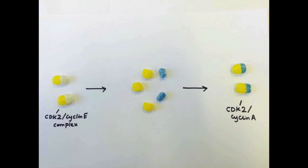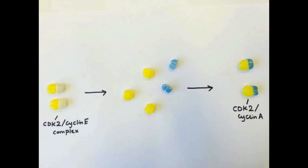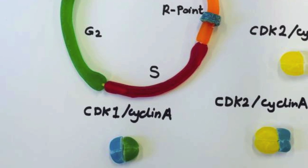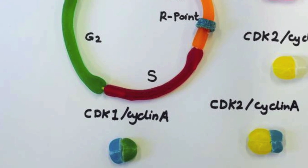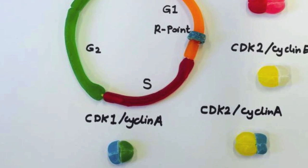At the onset of S phase, cyclin-E levels decline and CDK2 binds to cyclin-A. From here, the cell enters G2 and then M phase, completing the full cell cycle.